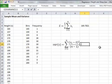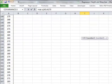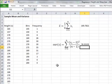And we just type in equals var dot s because it's a sample. That ensures that it divides by n minus 1. So here we go. And just copy down. The sample variance is 76.5539.